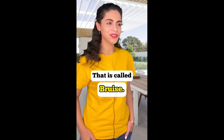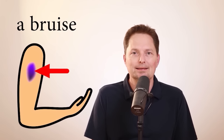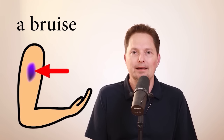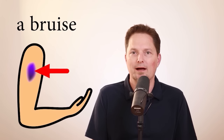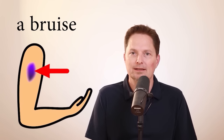This is also not correct. That is called 'bruise.' Bruise is countable, so I cannot say 'this is bruise.' I have to use an article: 'this is a bruise.' It's one countable thing. I cannot say 'he has bruise' — I have to say 'he has a bruise.' Let's practice: does he have a bruise? That's right — he has a bruise. It looks pretty bad.